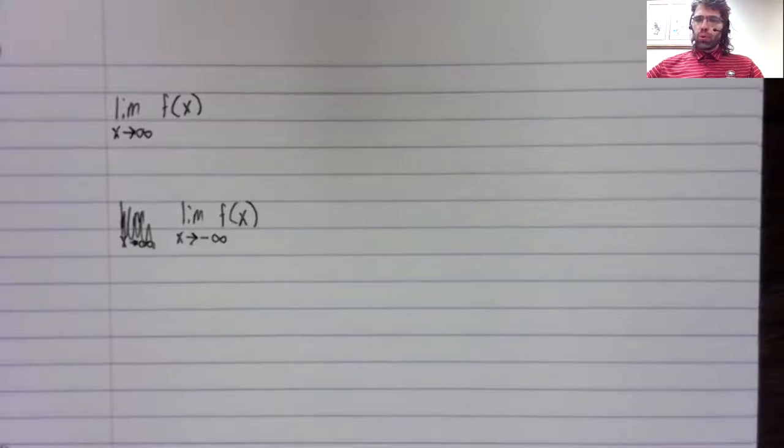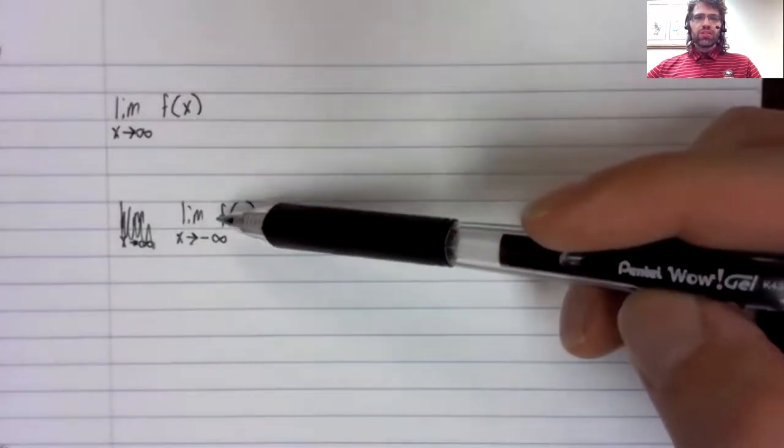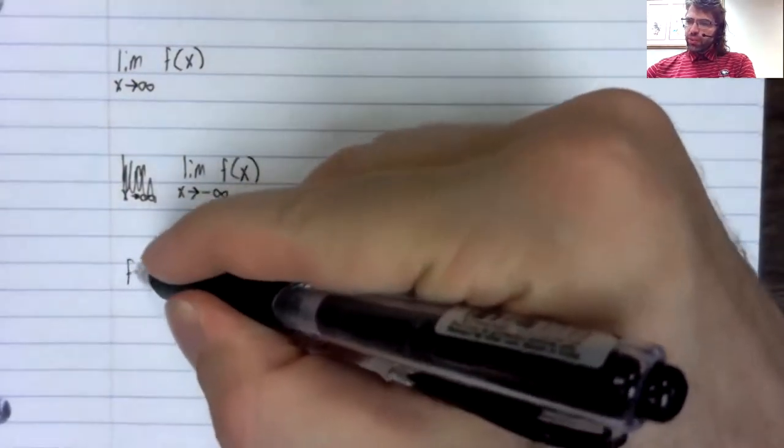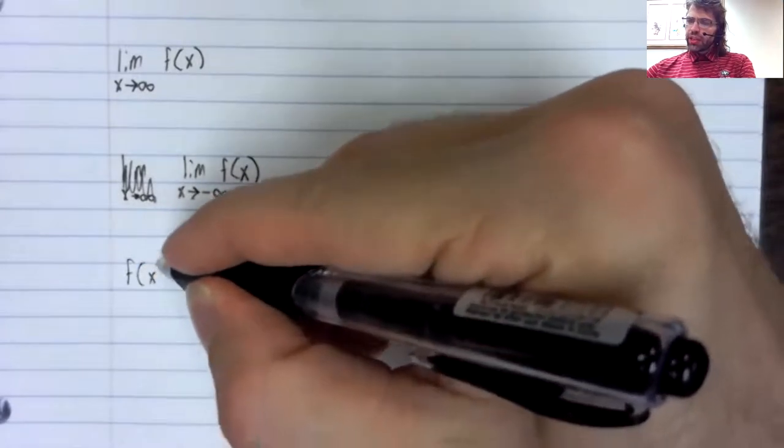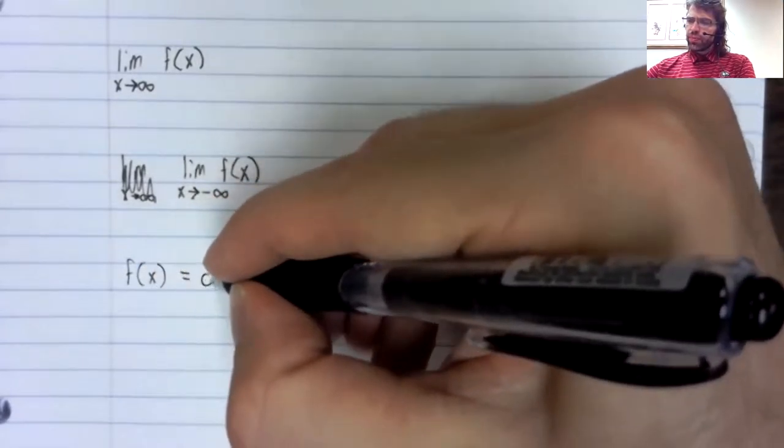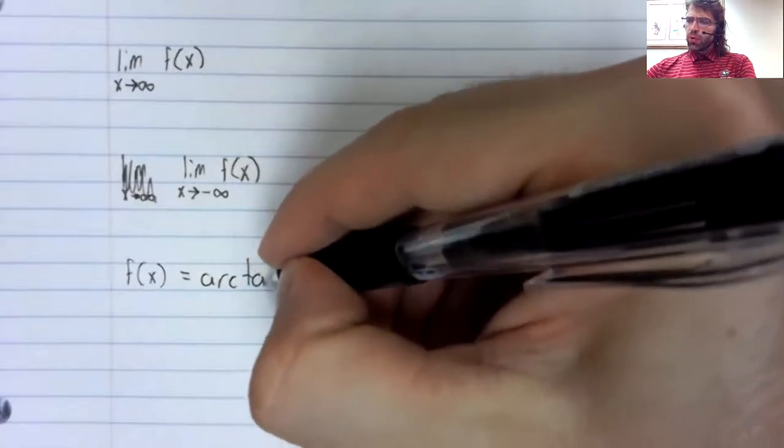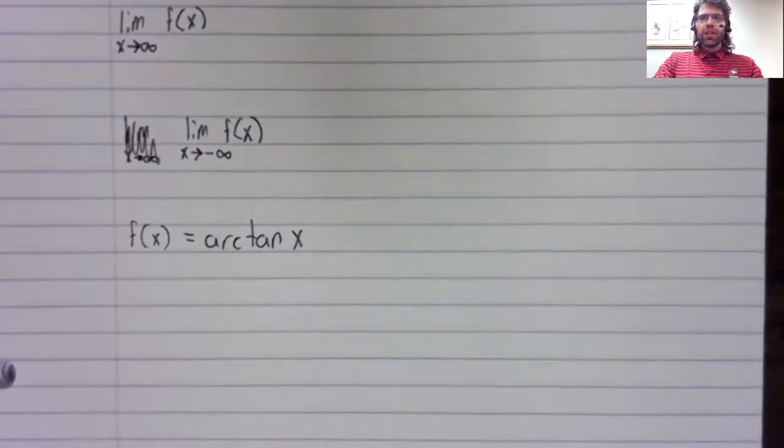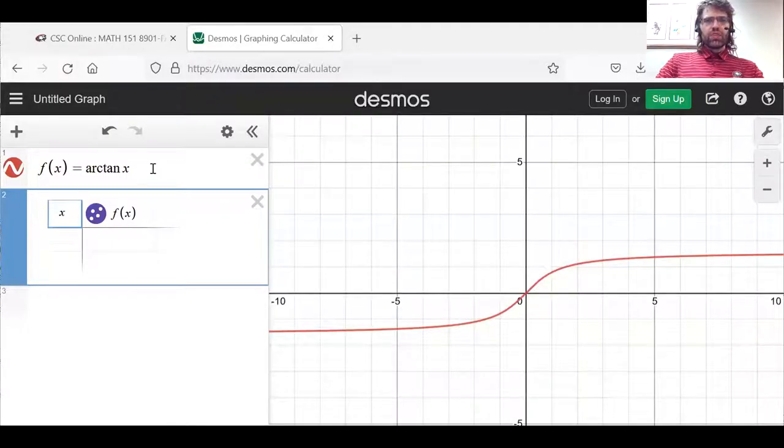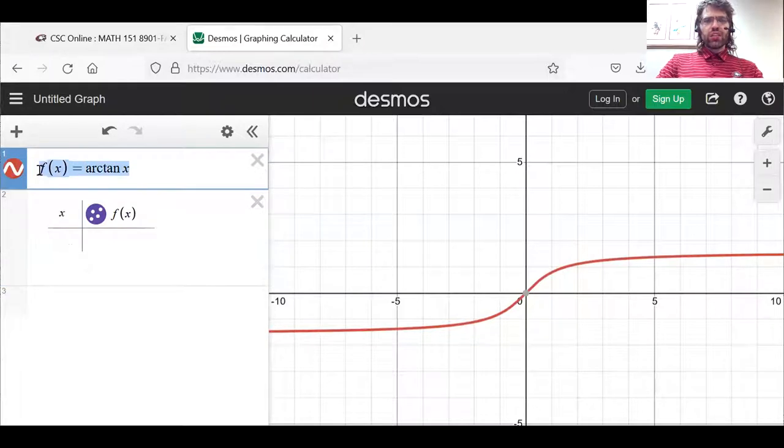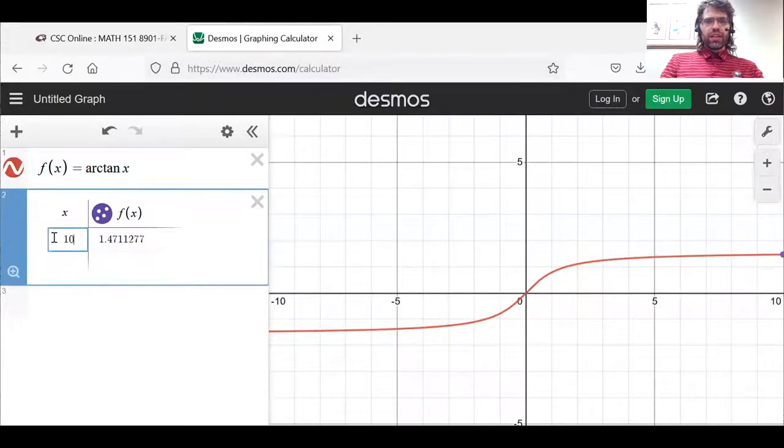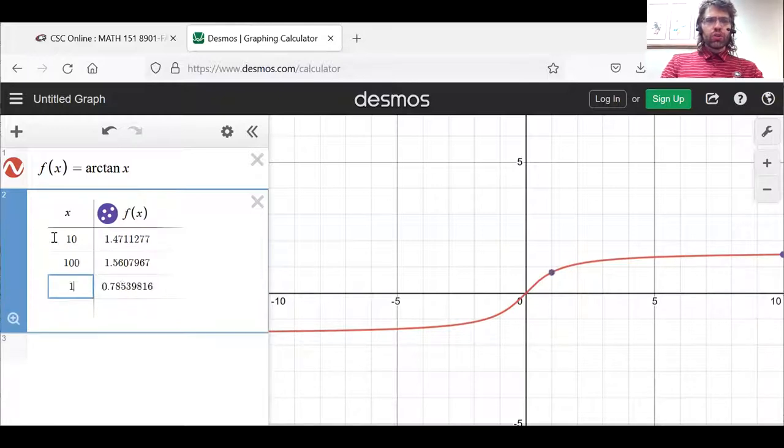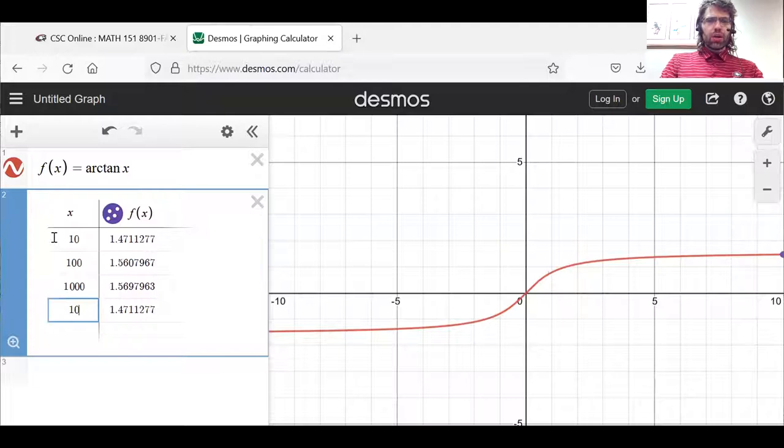As an example where both of these limits exist, we could look at f(x) equals the arc tangent of x. Let's go to decimals and ask what happens to the arc tangent as x gets larger and larger.